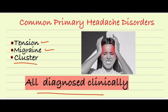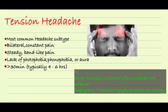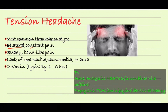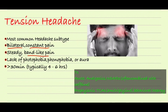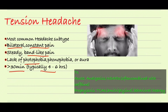Tension type headache is the most common subtype. The etiology is not that clear — probably multifactorial. In this type of headache, patients usually present with bilateral constant pain. The pain is pressing and tightening around the head — we also call it band-like pain sensation around the head. The headache usually lasts around 30 minutes to several hours.